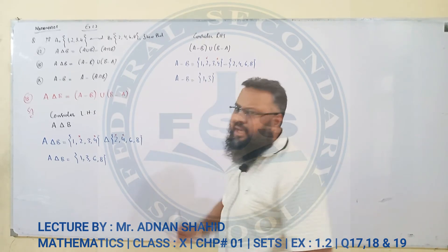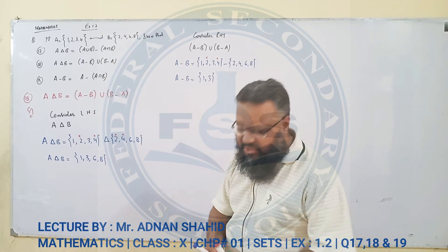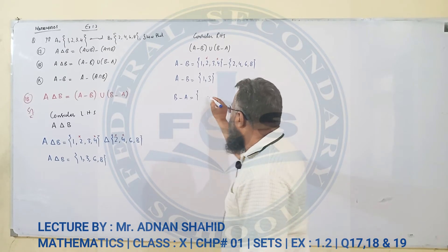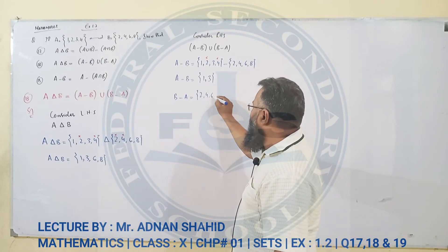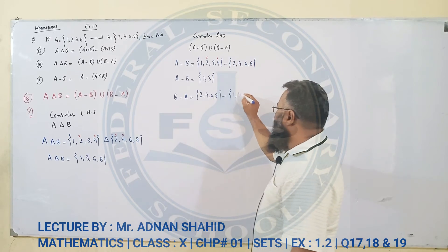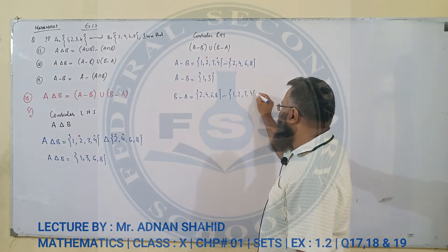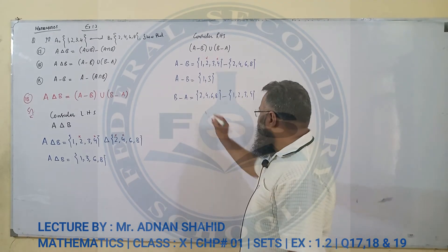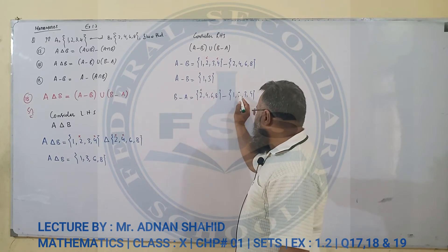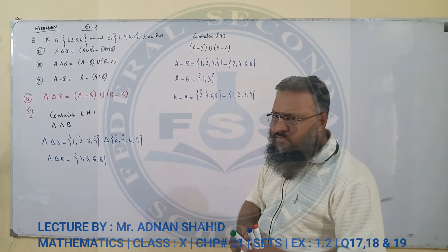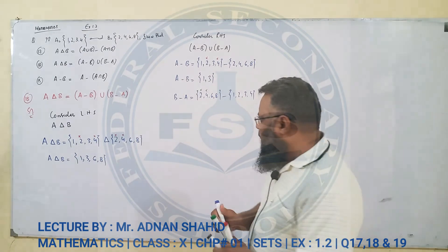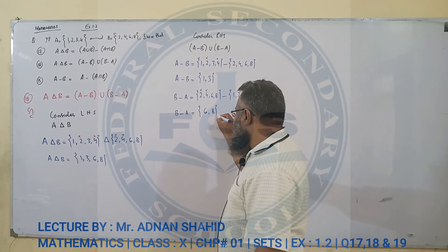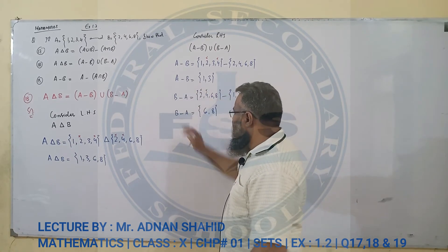A minus B = {1, 3}. अब B minus A निकालते हैं। B minus A: B elements 2, 4, 6, 8 minus A elements 1, 2, 3, 4. Common elements 2 और 4 को cross करते हैं। जो बचता है: B minus A = {6, 8}.